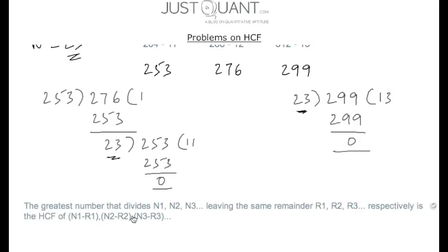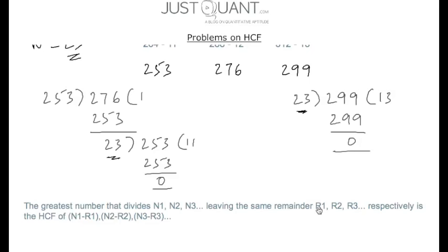In general, the greatest number that divides n1, n2, n3 leaving remainders r1, r2, r3 respectively is the HCF of (n1−r1), (n2−r2), and (n3−r3).